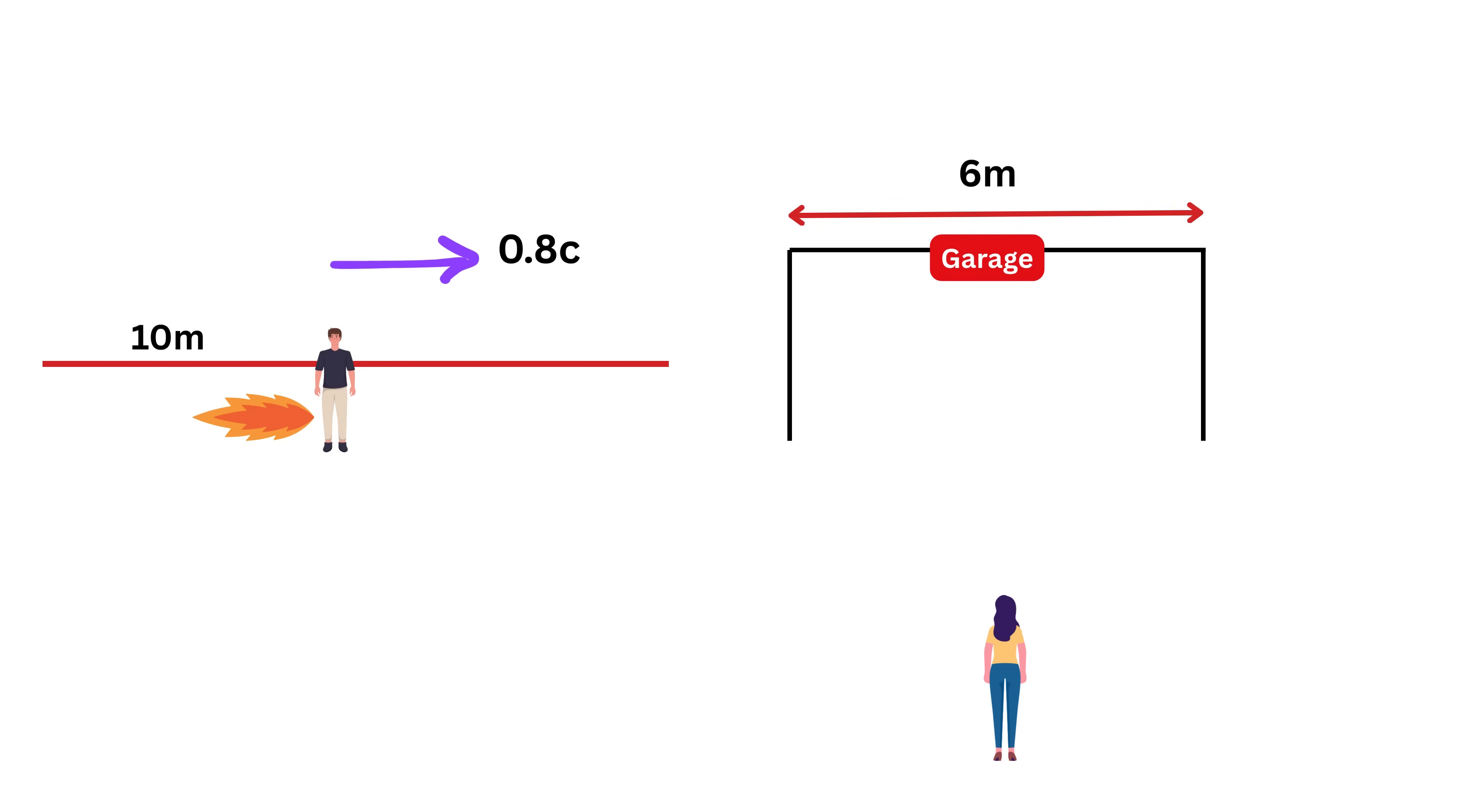The garage has two doors: a left door where Bob enters and a right door where Bob exits. Both the doors can open and close vertically like this. Right now both the doors are kept in an open position.